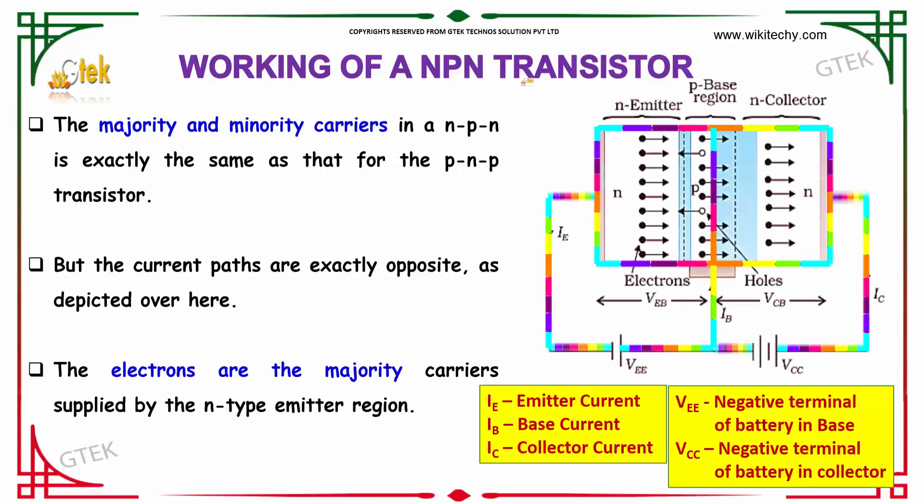Now, we will look into the NPN transistor. The majority and minority charge carriers in an NPN transistor are exactly the same as that of the PNP transistor. But the current paths are exactly opposite and are depicted here.